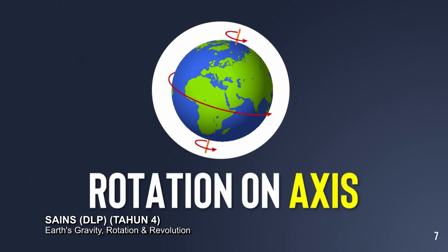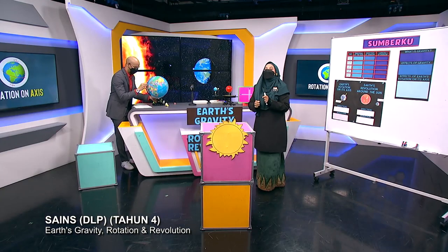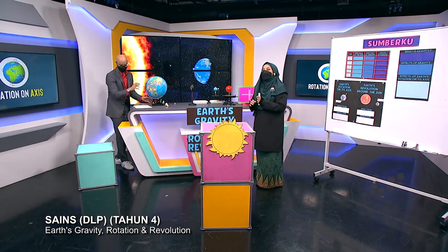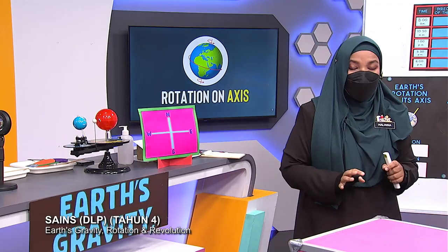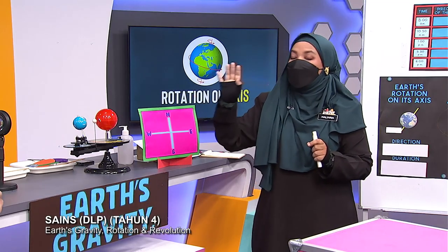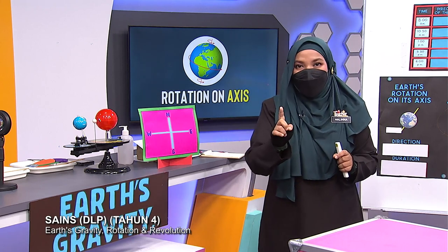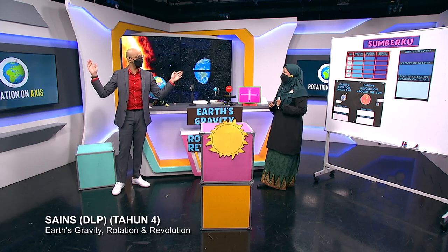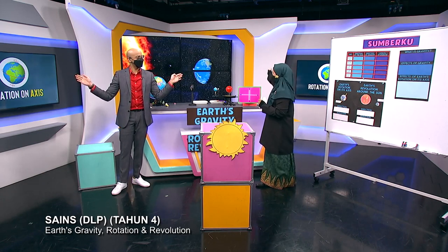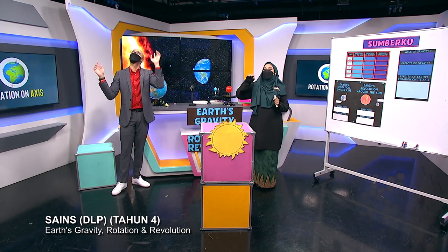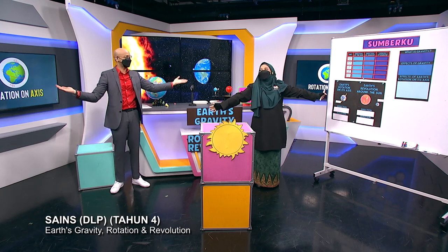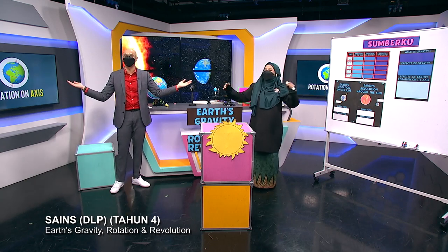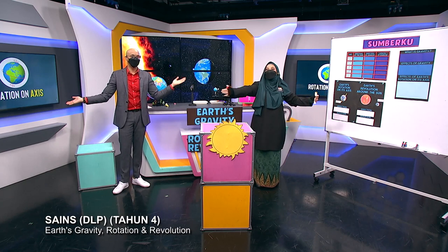The second thing about rotation is the direction. The earth actually rotates from west to east. So if north is on this side, west would be this side and east would be the other side. The earth rotates from west to east.